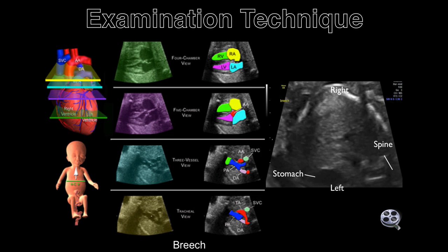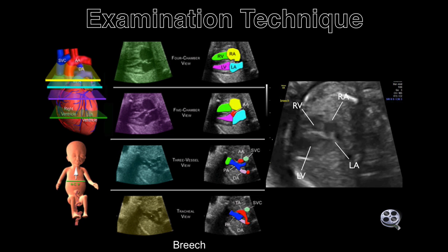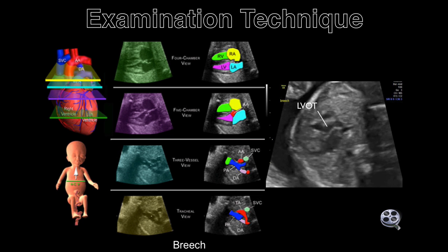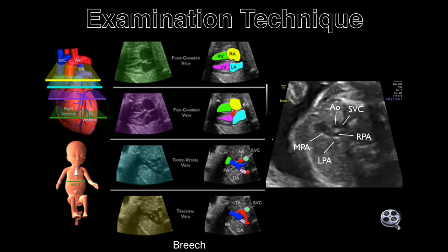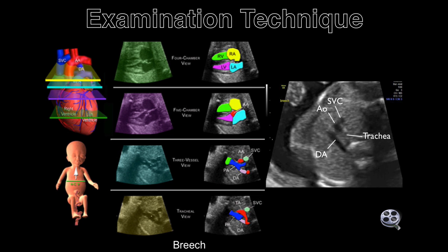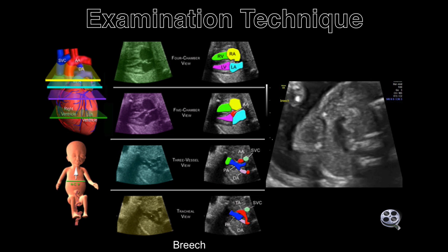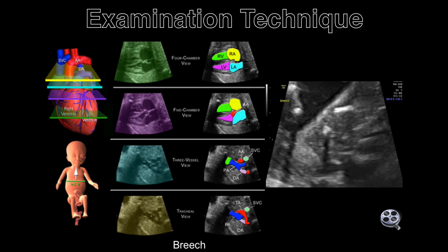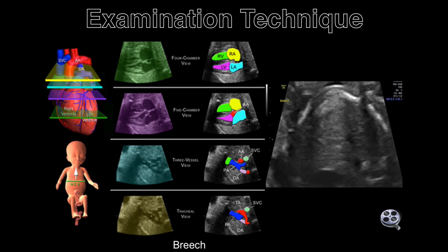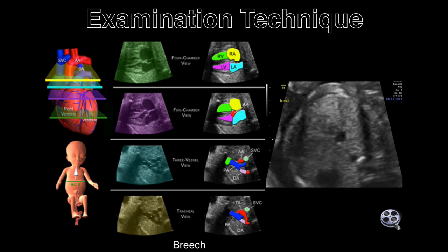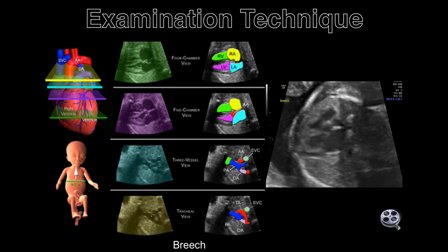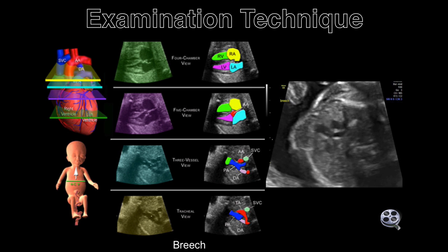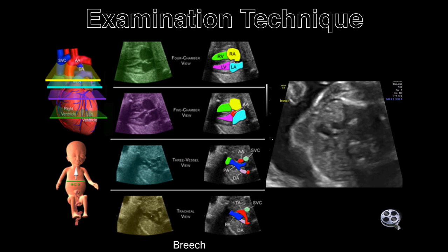4. The tracheal view. This demonstrates the ductus arteriosus and the transverse aortic arch forming a V as they enter the thoracic aorta. The trachea is located to the right of the aorta. Abnormalities of this view identify coarctation of the aorta, hypoplastic aortic arch, as well as other malformations.